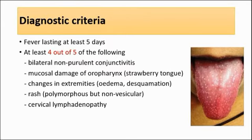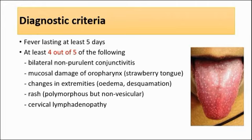The third criteria is changes in extremities, which includes edema or erythema of the hands and feet, and also desquamation — peeling of the skin — which typically begins periungually, meaning peeling that starts from the nails. The fourth criteria is rash; in Kawasaki disease the rash is usually truncal, polymorphous but non-vesicular. The final criteria is cervical lymphadenopathy.